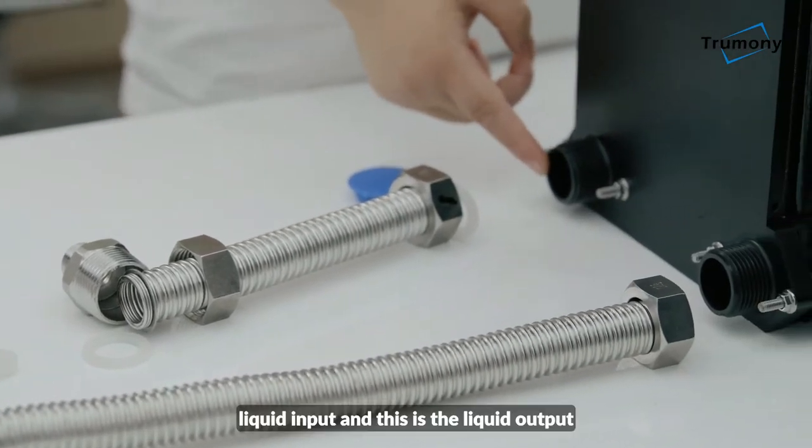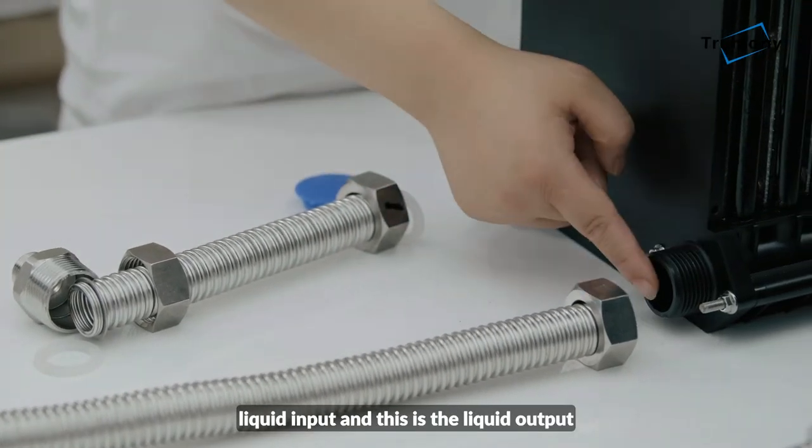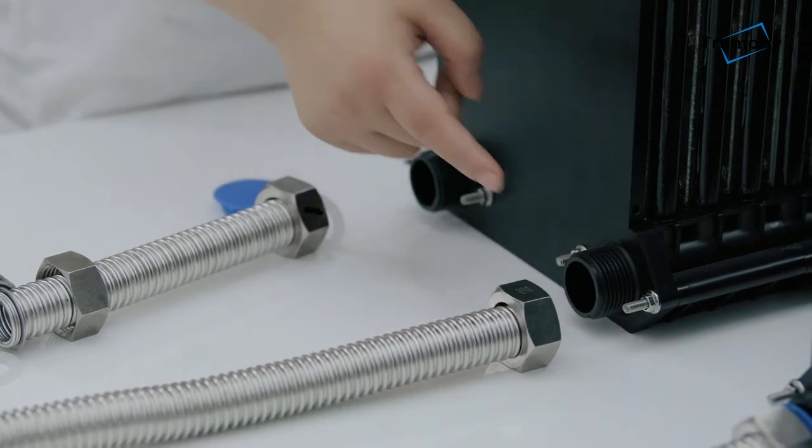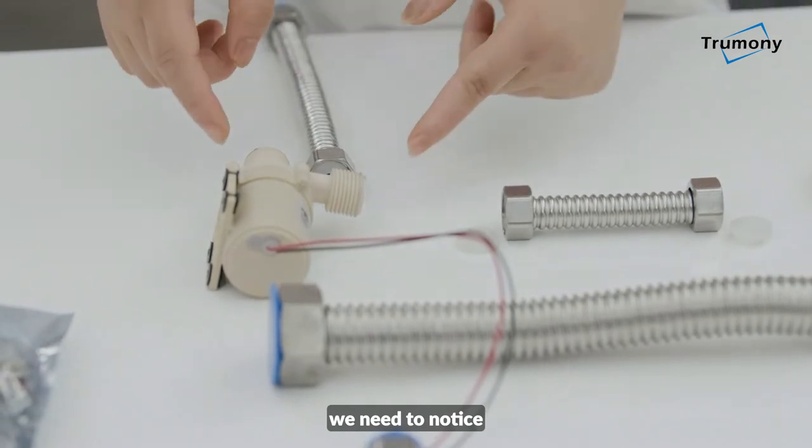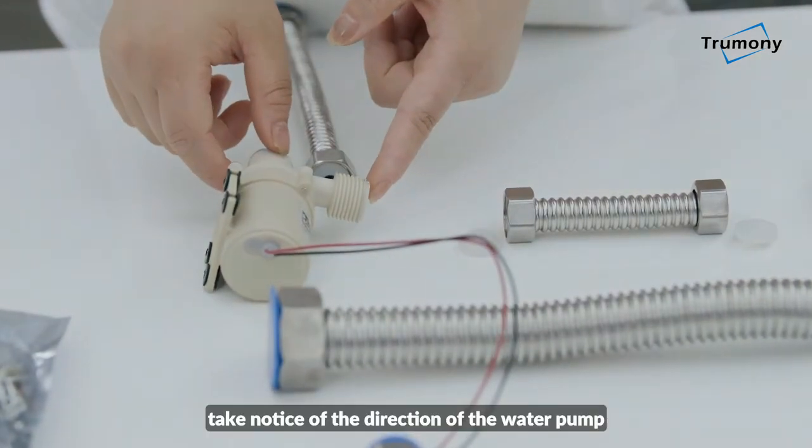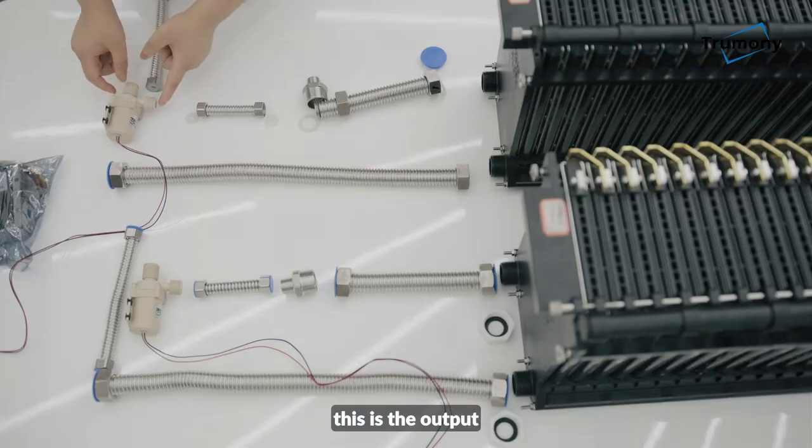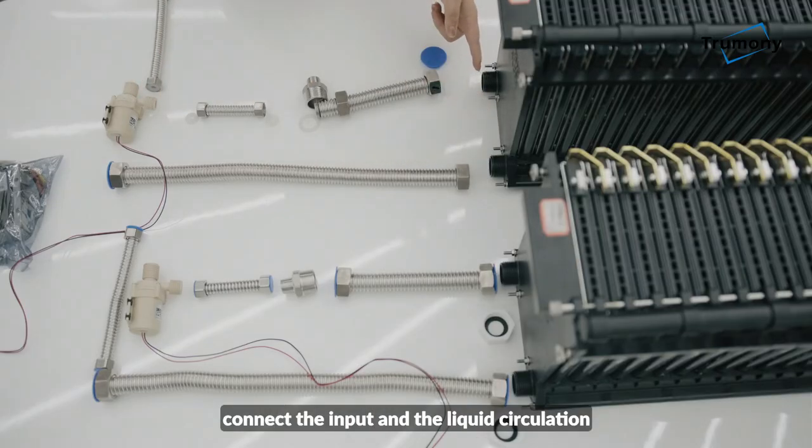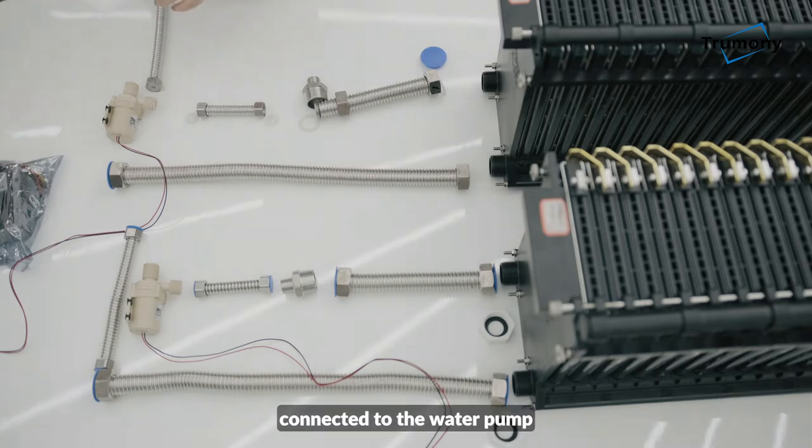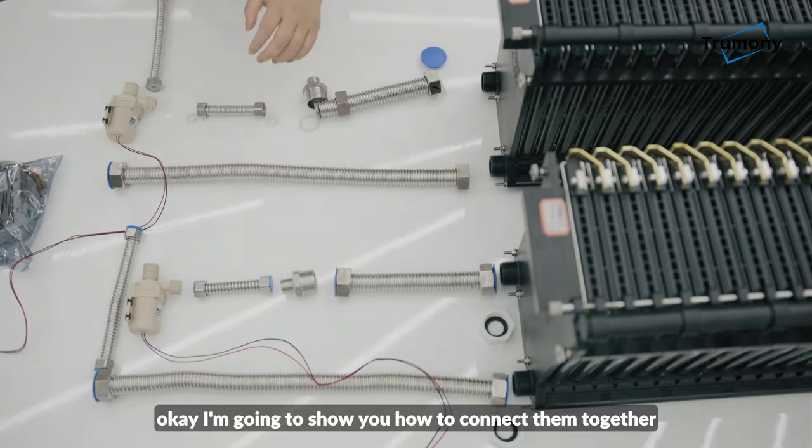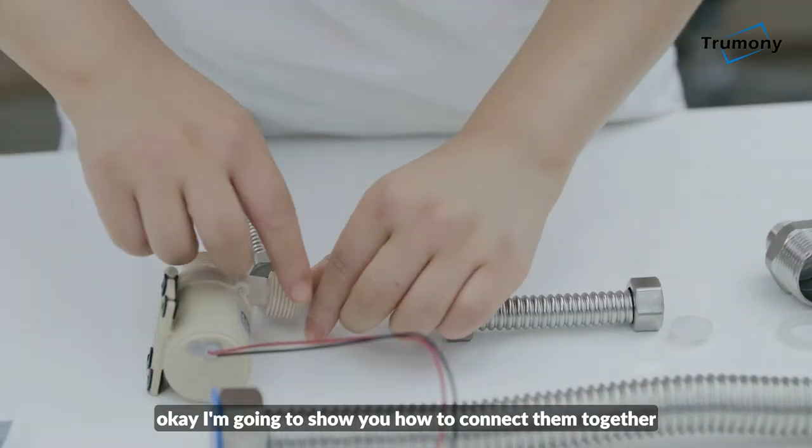This is the input liquid input and this is the liquid output. Before we assemble, we need to take notice of the direction of the water pump. This is the output, so output connects the input and the liquid circulation to the output and it can be connected to the water pump for the whole circulation. I'm going to show you how to connect them together.